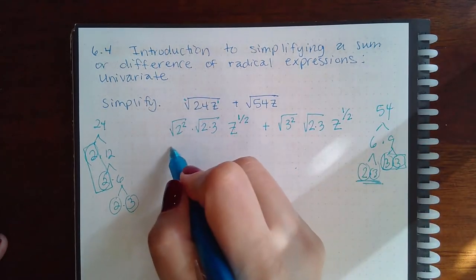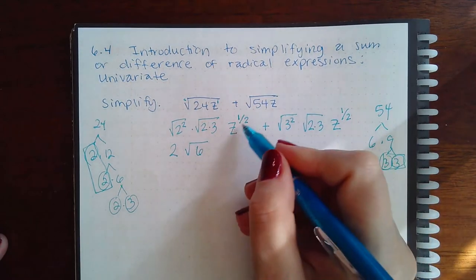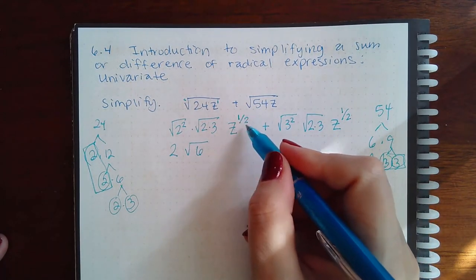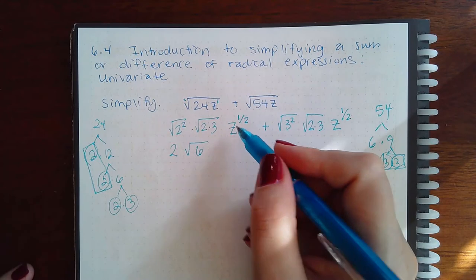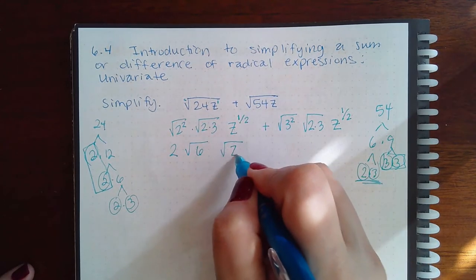So these will cancel out, giving me the 2. I can multiply those together and get a 6. This cannot reduce. 1 half does not reduce any further. 2 does not go into 1. So I'm just going to put it back in its radical form.